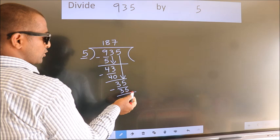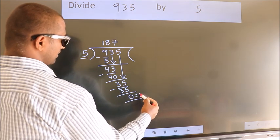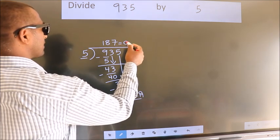No more numbers to bring down. So we stop here. This is our remainder. This is our quotient.